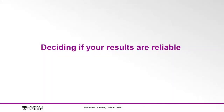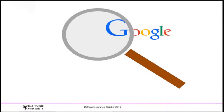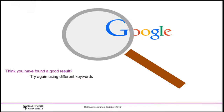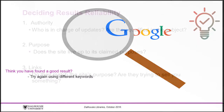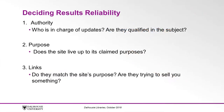Deciding if your results are reliable. It's important to recognize that not everything found on Google is accurate. The order of results doesn't indicate their credibility — they have been ranked by Google according to their own methods. A good tip to remember is that if you have found what you think is a good result, take a few more seconds and try the search again using some different keywords. You might be surprised to find more results that are appropriate for your question.